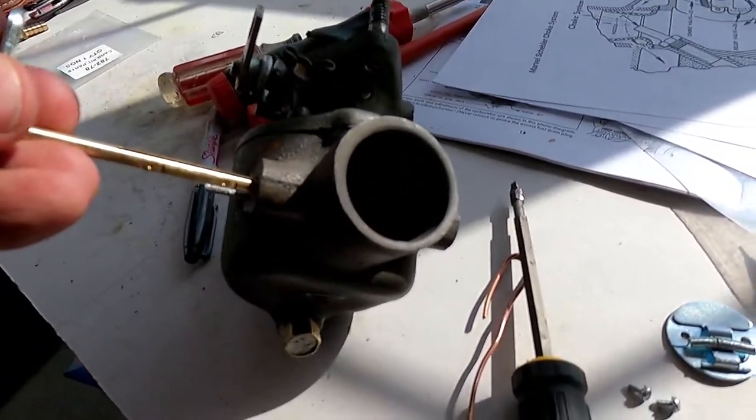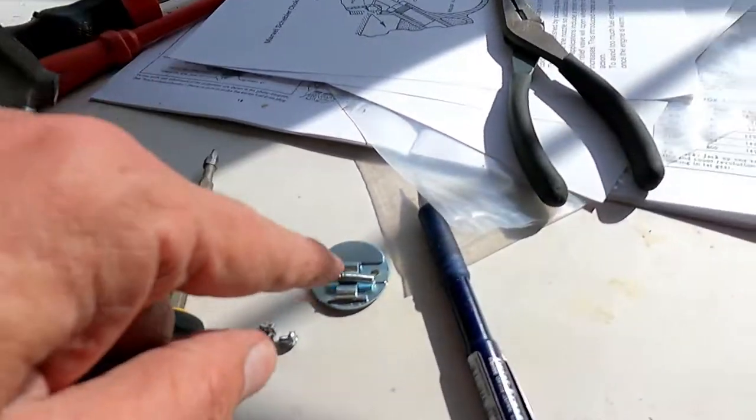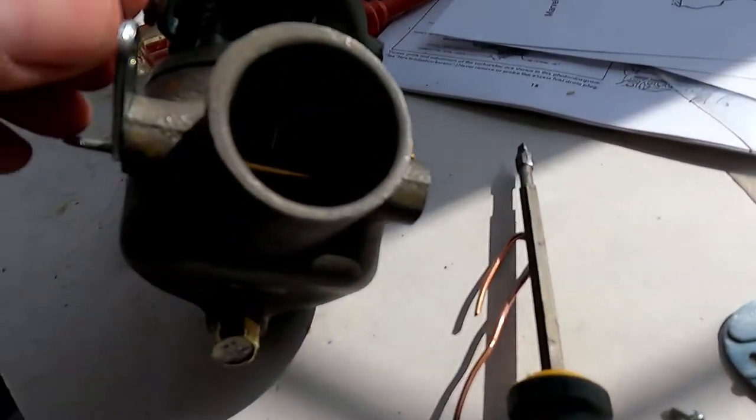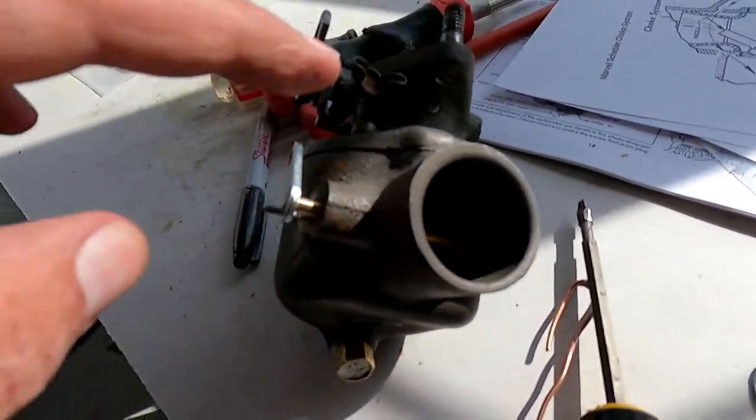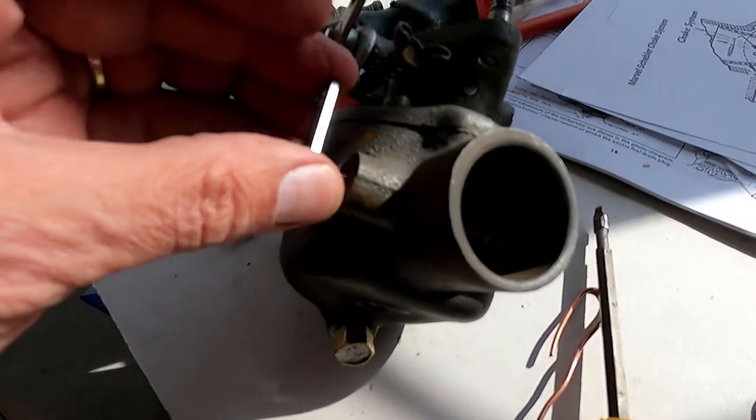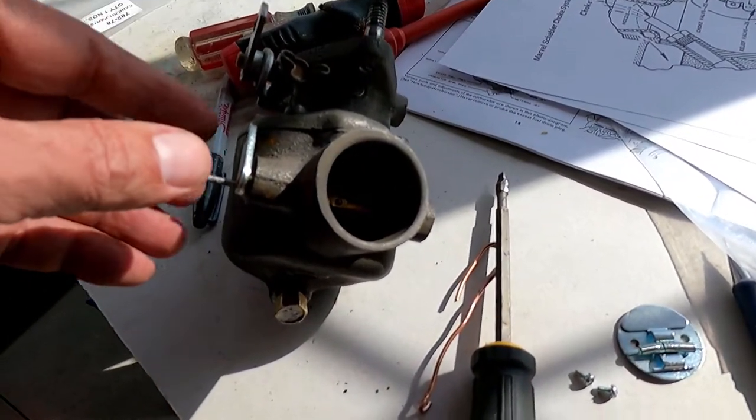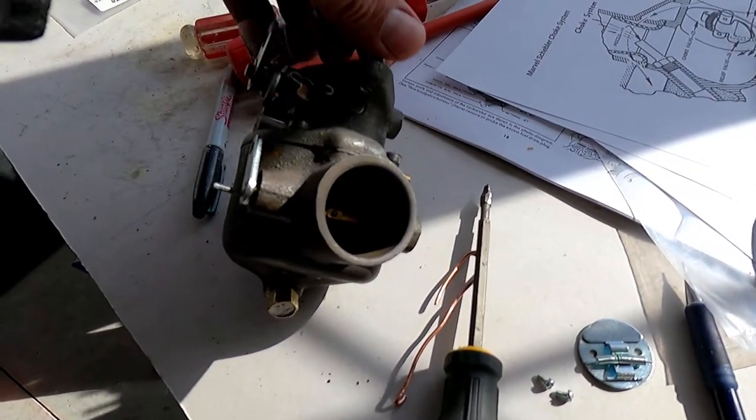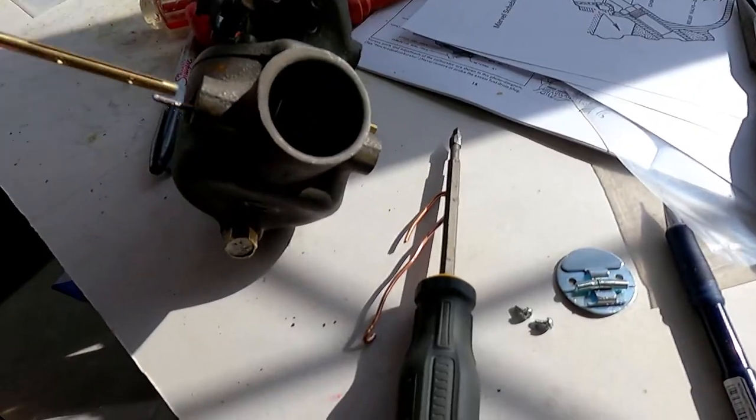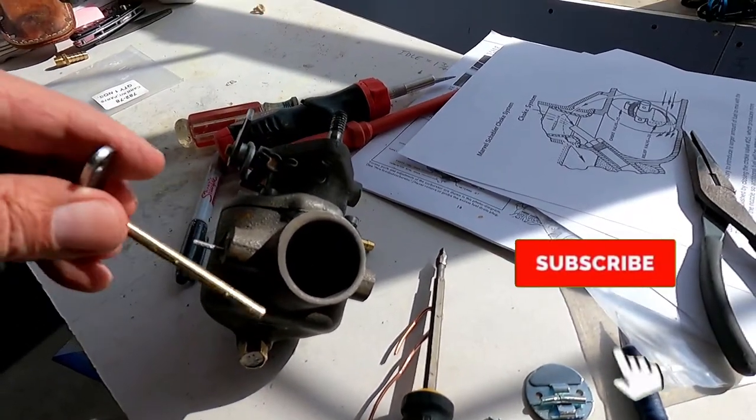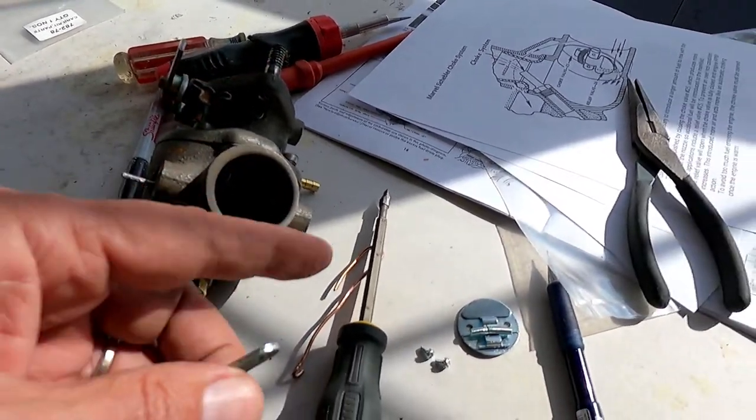With this in place you can get the choke plate in there but no matter what it's going to be closed when it's at the stop. I finally found a video online, just a 3D video not an actual carb, but it shows them inserting the choke plate and turning it to the stop and putting the spring on.